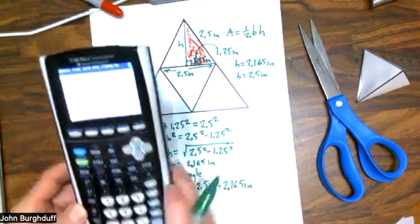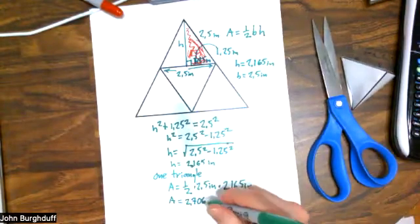2.706 what? Well, all of my units are in inches, so this would be square inches.